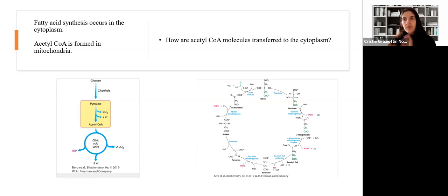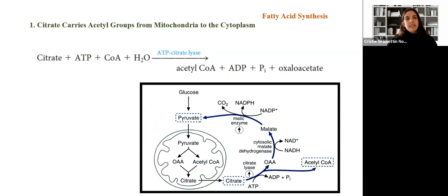First, we need to take acetyl-CoA from the mitochondria and move it to the cytosol. If you recall, when we studied glycolysis, we produced pyruvate, and pyruvate generated acetyl-CoA in the mitochondria. So how do we take this acetyl-CoA out and move it to the cytoplasm? The answer is citrate. Through citrate, acetyl-CoA can leave the mitochondria and be released into the cytoplasm. Citrate in the cytoplasm, through the action of the enzyme citrate lyase, leads to the release of acetyl-CoA.